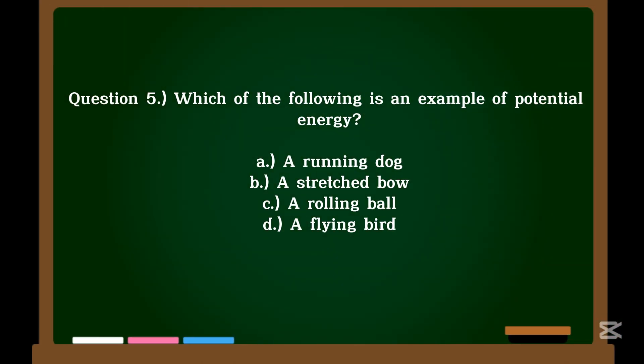Question 5. Which of the following is an example of potential energy? A. A running dog. B. A stretched bow. C. A rolling ball. D. A flying bird.